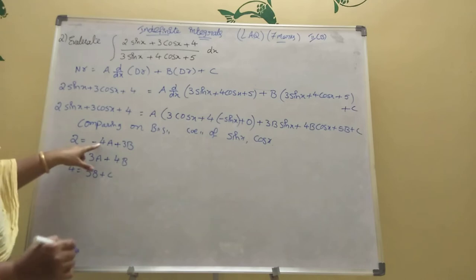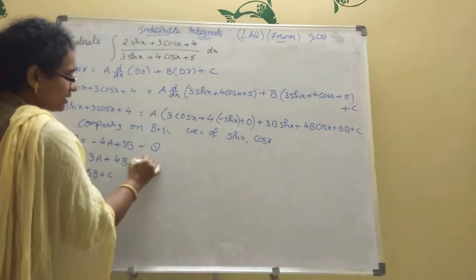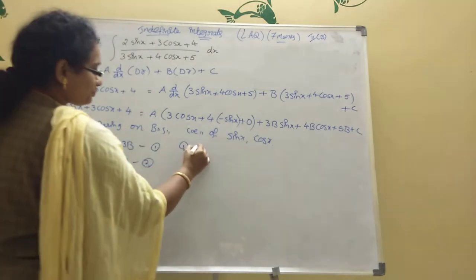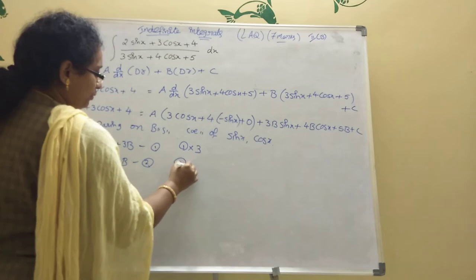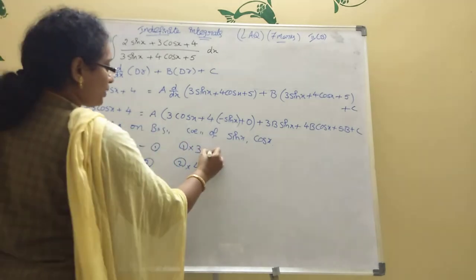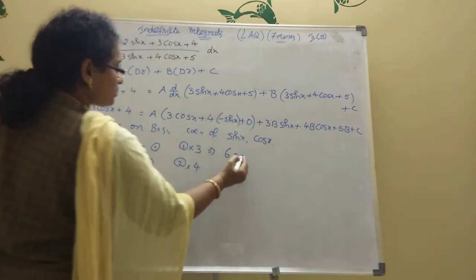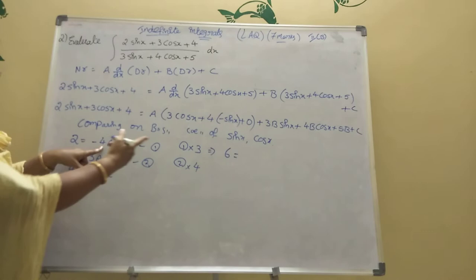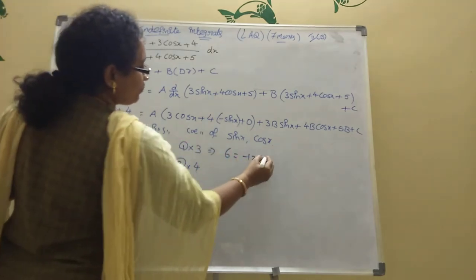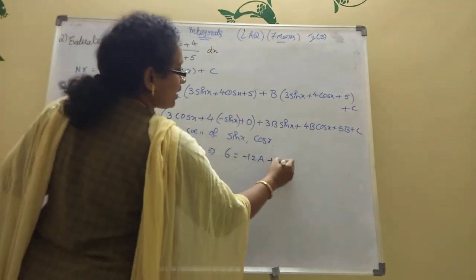To solve equations one and two, multiply equation one by 3 and equation two by 4. Equation one times 3: 6 equals minus 12A plus 9B. Equation two times 4: 12 equals 12A plus 16B. Now add them together since minus 12A and plus 12A cancel.